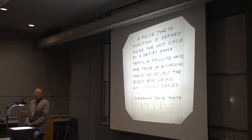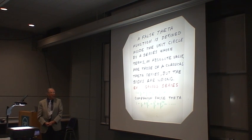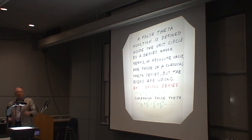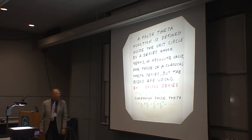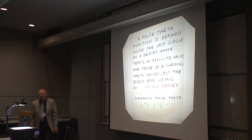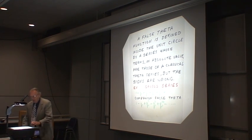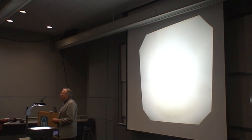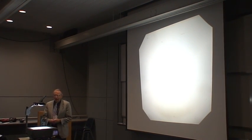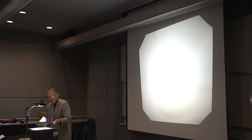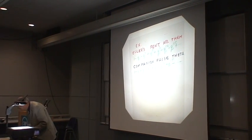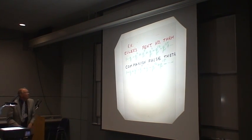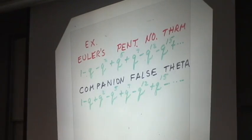It is possible to change q into minus q in the top line, but in that case you get a pair of minus signs, a pair of plus signs. There's no way by a change of variable to change the top line into the bottom line. This is what Rogers called the false theta function, but he buried that name in one of the papers that nobody read until Ramanujan came along and popularized them. A further example is Euler's famous pentagonal number theorem, which is listed in the top line here. A companion false theta series is this same series with alternating signs.